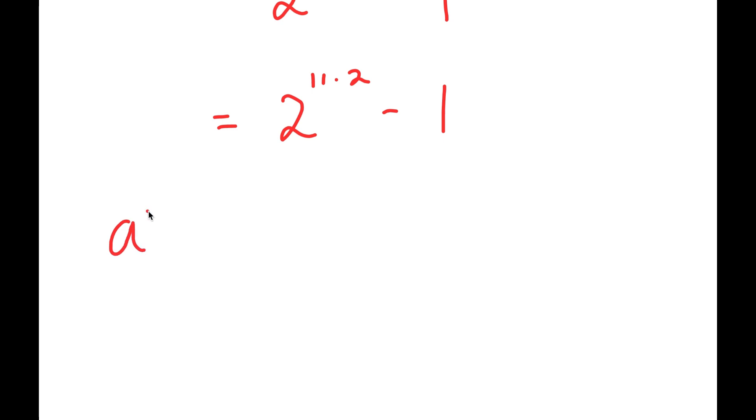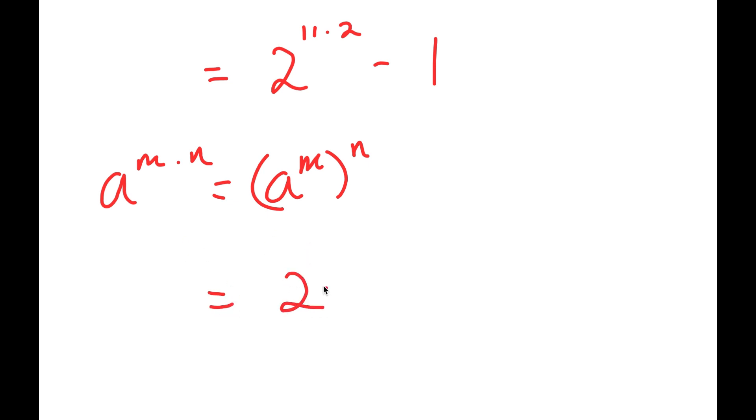If I have something in the form a to the power of m times n, this is equal to a to the power of m to the power of n. So, 2 to the power of 11 times 2 is equal to 2 to the power of 11 to the power of 2 minus 1.